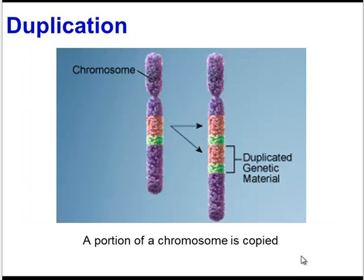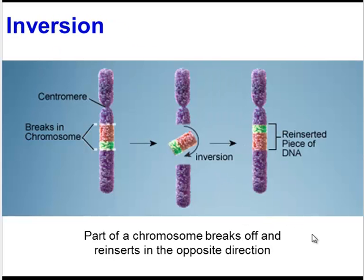The second type is a duplication — the opposite of a deletion. A portion of the chromosome is copied and then inserted, adding genetic information. Another type of chromosomal mutation is an inversion. In this case, a portion of the chromosome breaks off and inverts, or flips upside down, and then reattaches. So all of the genetic information is there, but some of it is in the wrong order.